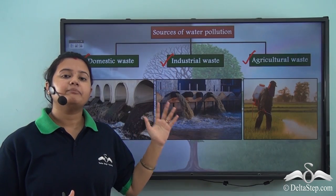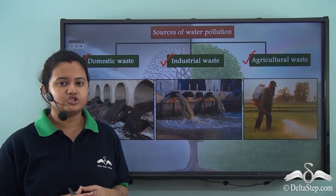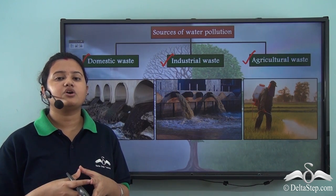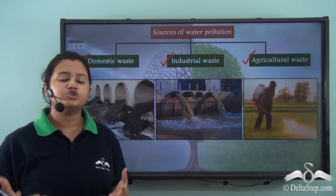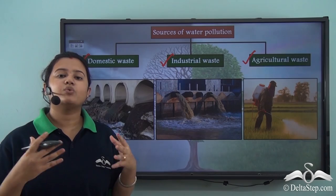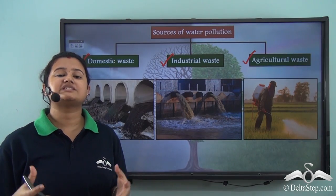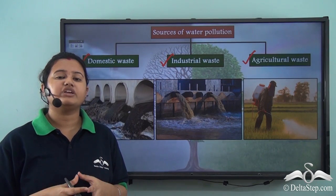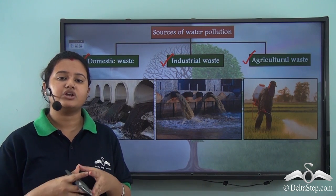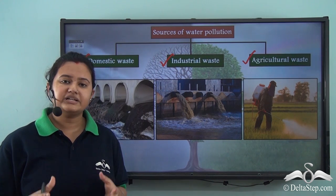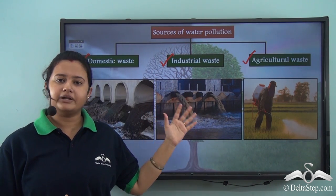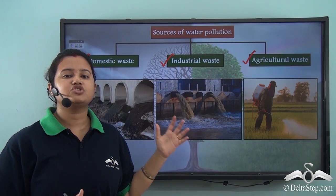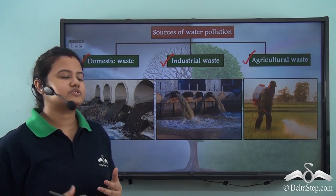These are the major sources of water pollution, and they are mostly caused by human activities. Since water pollution is mostly induced by human activities, we can control these sources in order to mitigate or curb water pollution. Let's see how we can control each of these sources.